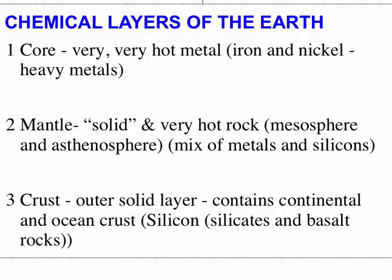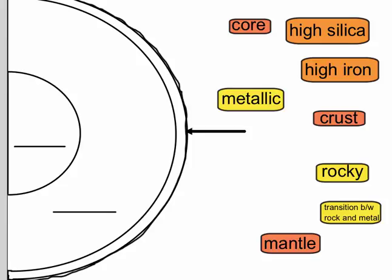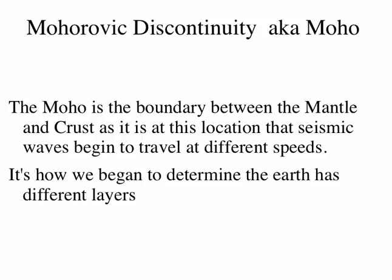So hopefully you can get all your notes there, and then you can go back and identify the three chemical layers and what's in them. But there's one fun thing to do, and that's this transition between rock and metal — a very famous thing called the Moho, or the Mohorovičić discontinuity. It's the boundary between the mantle and the crust in the chemical layer, and it's at this location that seismic waves begin to travel at different speeds.